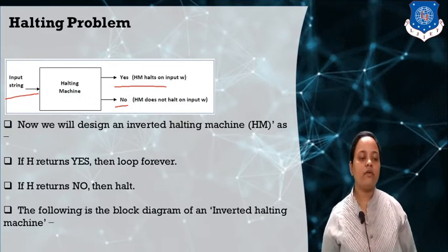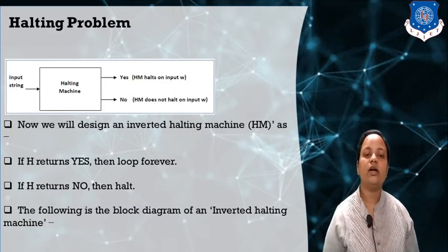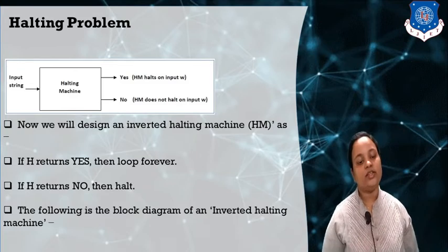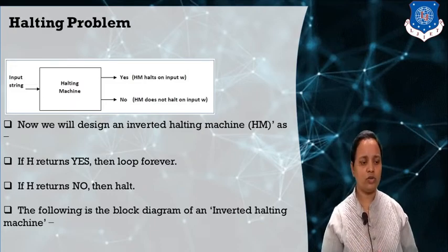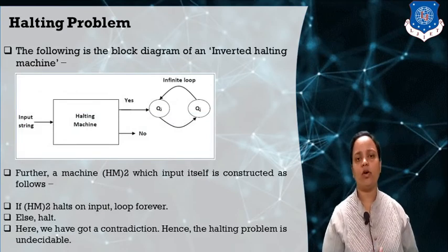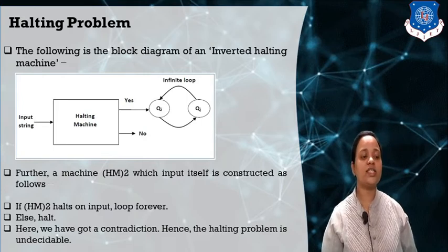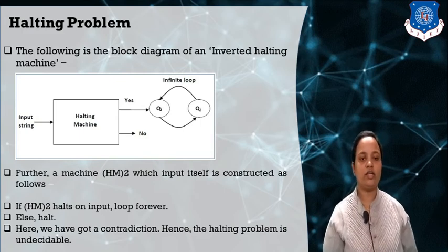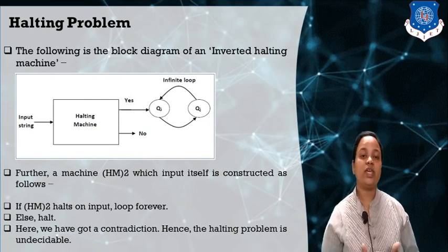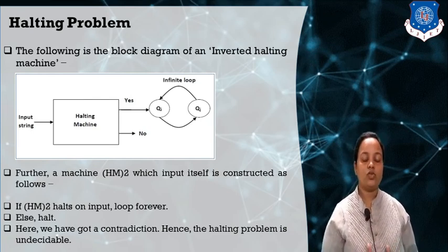Now we design an inverted halting machine. If the halting machine H returns yes, the inverted machine loops forever; if H returns no, it halts. This is a modification of the original Turing machine. As shown in the block diagram for the inverted halting machine, it takes the input and for the yes state it goes into an infinite loop. Machine 2 halts on an input that would loop forever in H, and loops on inputs that H would halt on. Here we have a contradiction, so the halting problem is an undecidable problem.